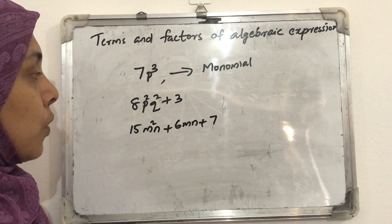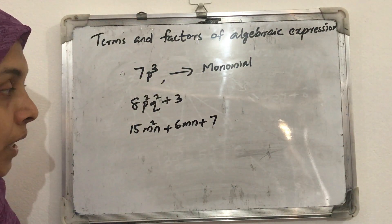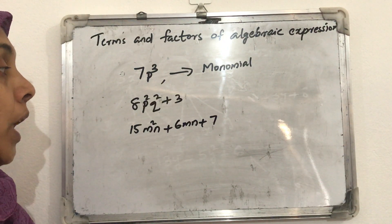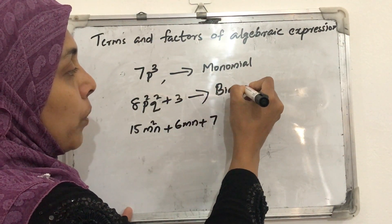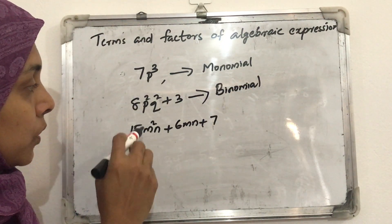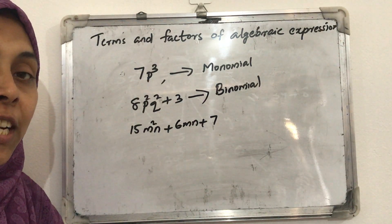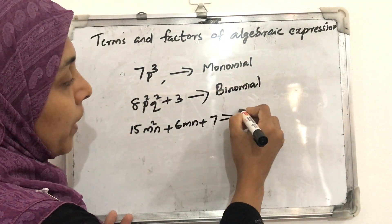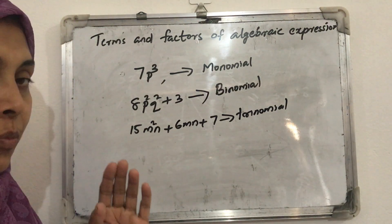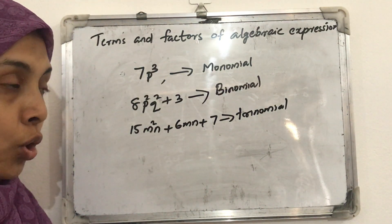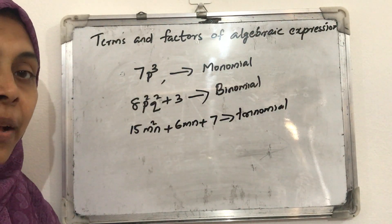In the second expression, 8p²q² plus 3, there are two terms. If an algebraic expression contains only two terms, we call it a binomial. And what about an algebraic expression with three terms? We call it a trinomial. So: one term is monomial, two terms is binomial, and three terms is trinomial.